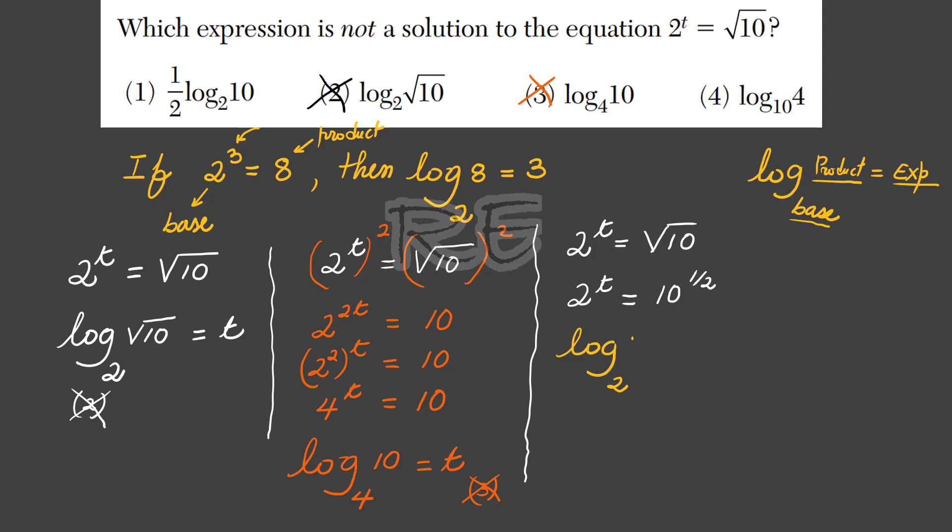In logarithmic form, log base 2 of 10 to the 1 half equals t. Using the power rule of logarithm, log base 2 of 10 to the 1 half is 1 half log base 2 of 10 equals t. Therefore, option 1 is a solution. We must cross out 1.